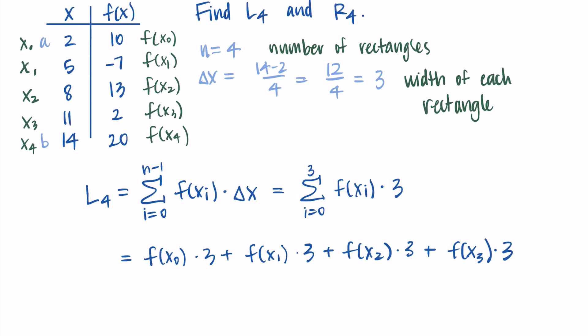Then using my data, I have that the x sub 0 output is 10, the x sub 1 output is negative 7, then 13, and 2. So I'm just following that through from the table. I'm also going to factor out the 3, the Δx, since it's in all of these, and I can just multiply it by it at the very end. So when I add everything up inside my parentheses, I'm getting 18. So I have 3 times 18, which is 54, as the value for my left Riemann sum.